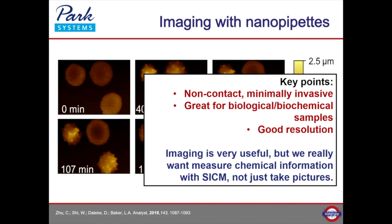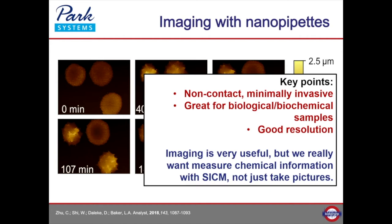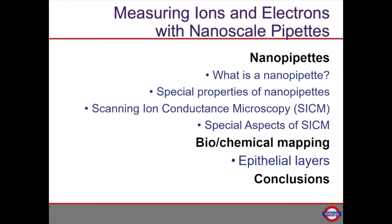What my group has been trying to do for the last 15 years or so is to try to get chemical information out of SICM and not just take pictures. A lot of groups had previously done really nice work with elegant mechanisms for imaging, but what we want to do is try to extract the chemistry. That's where I'm going to tell you about this experiment we've had going for a long time on trying to map biochemistry in tissue layers.